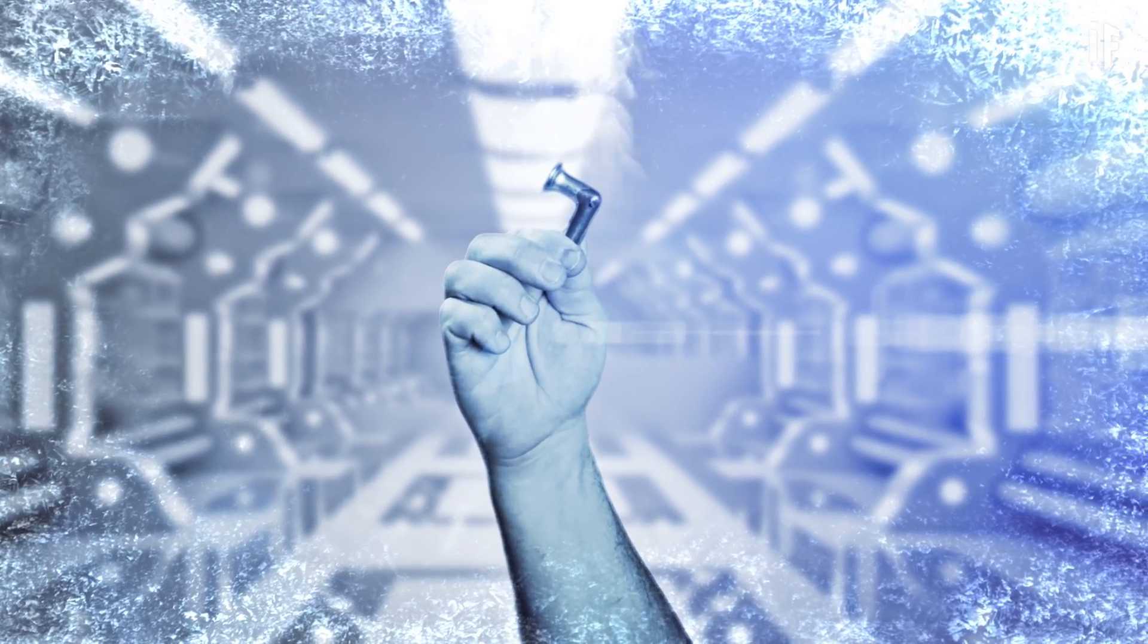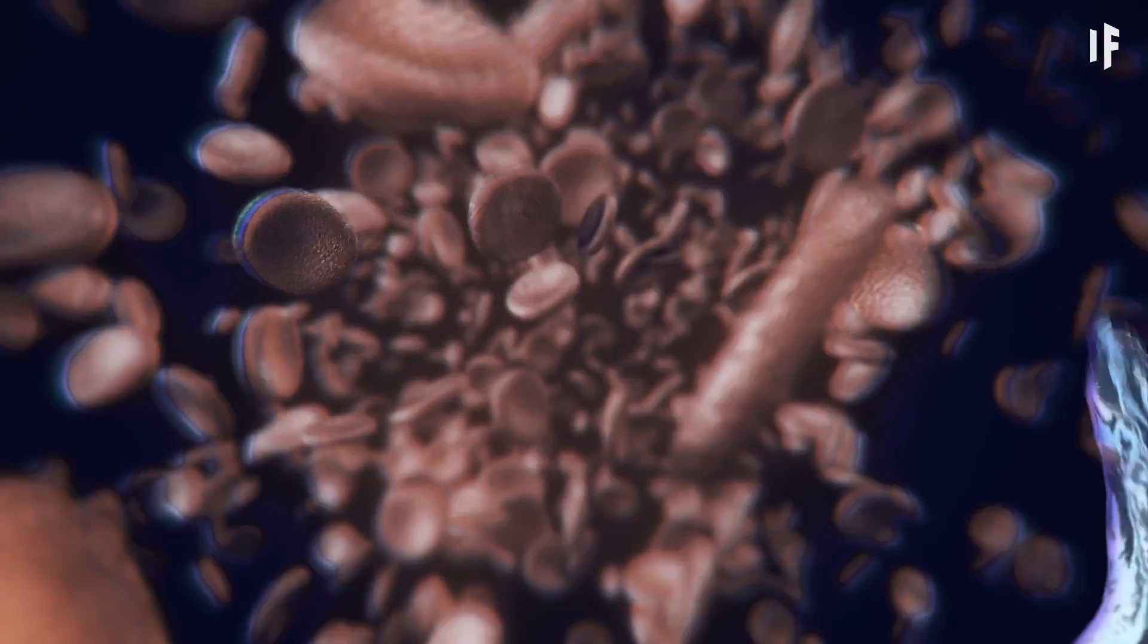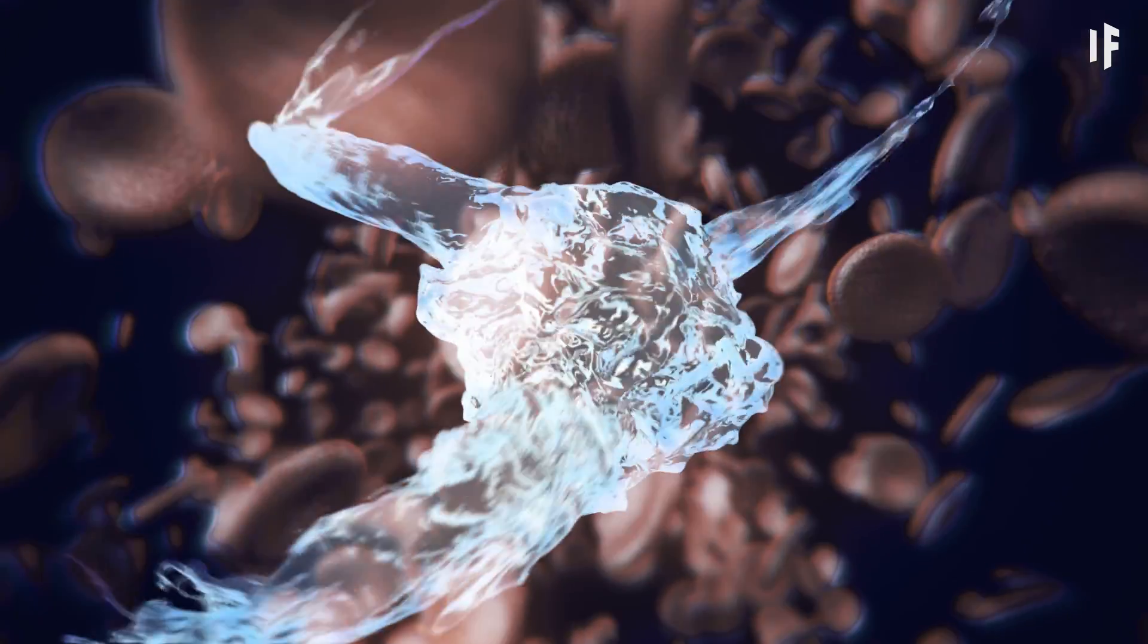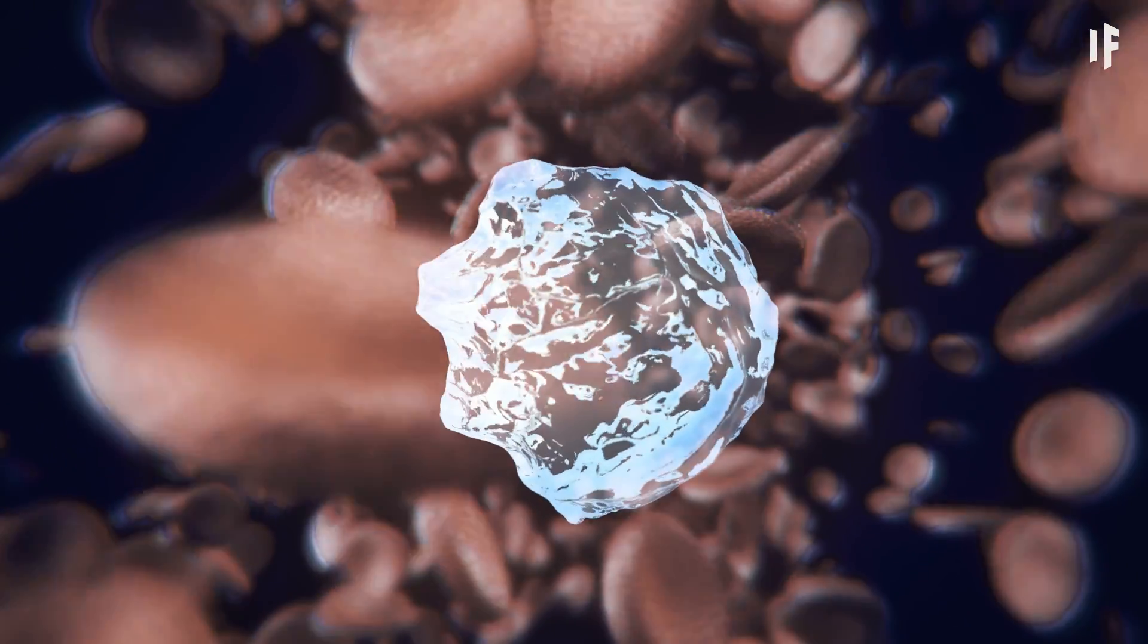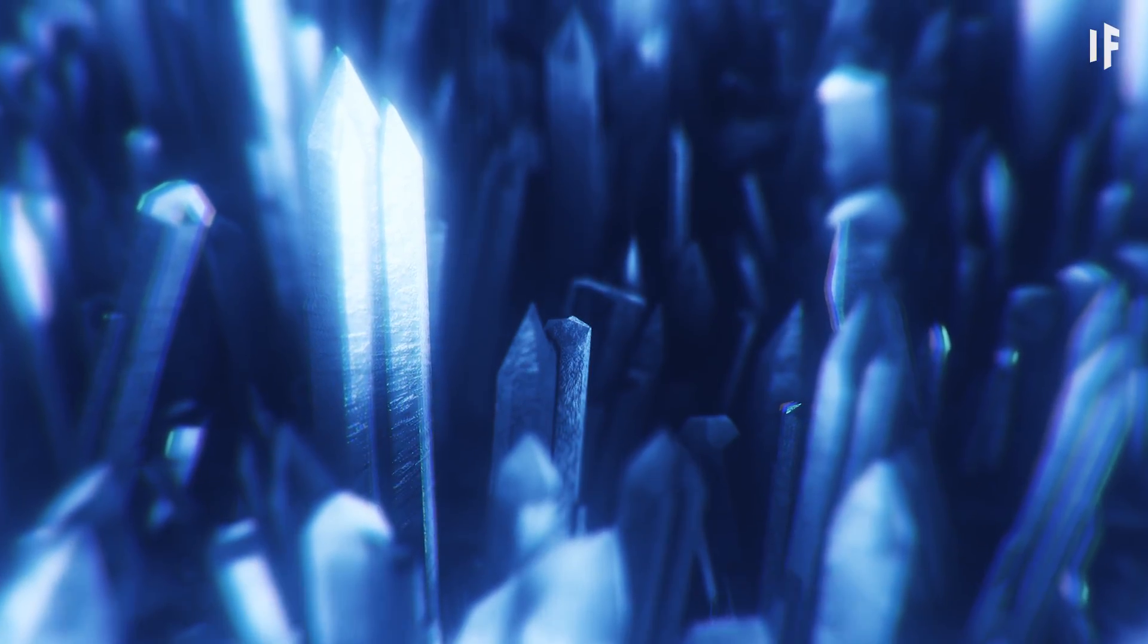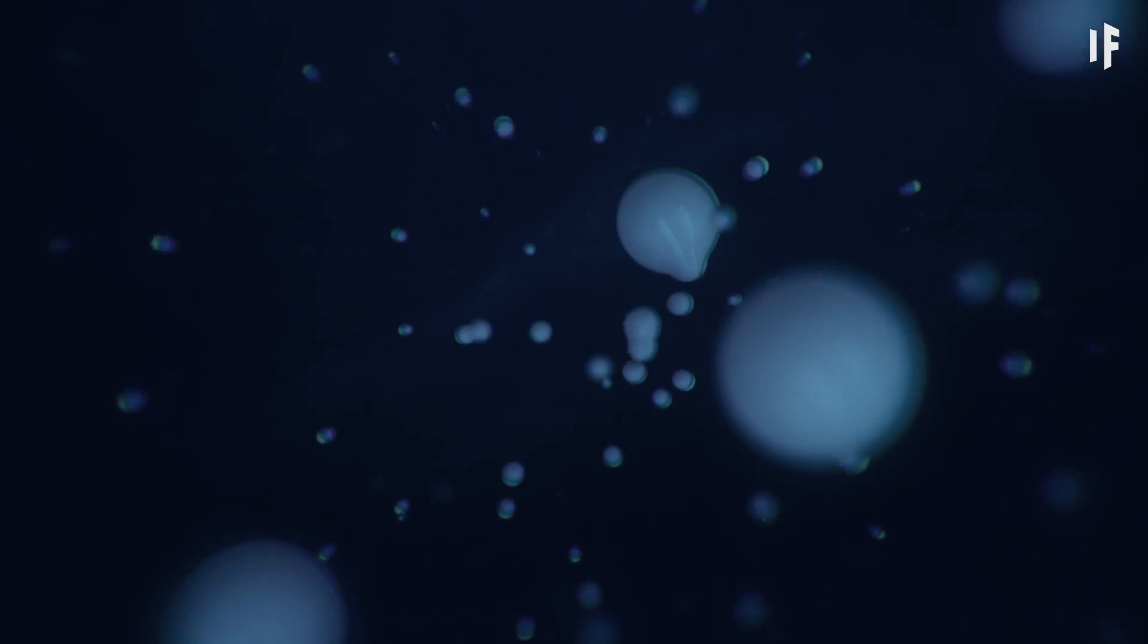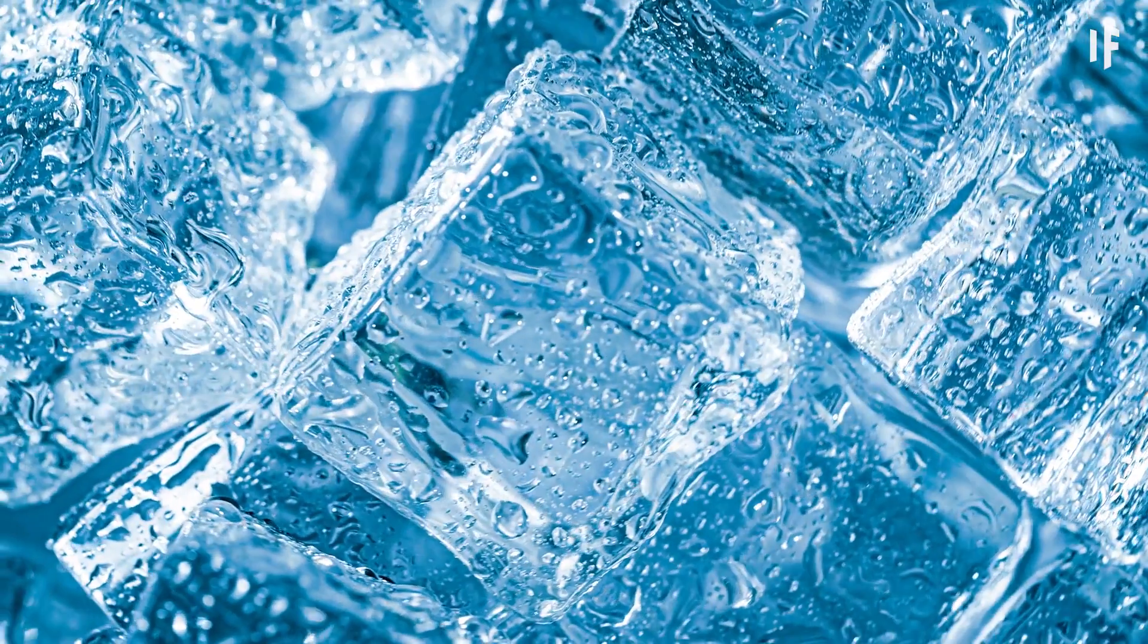At Absolute Zero, the piece of metal will lower your cell's temperature until they are so cold that the liquid inside them freezes. This would create sharp ice crystals and damage the structure of your skin cells. And brace yourself, it gets worse.